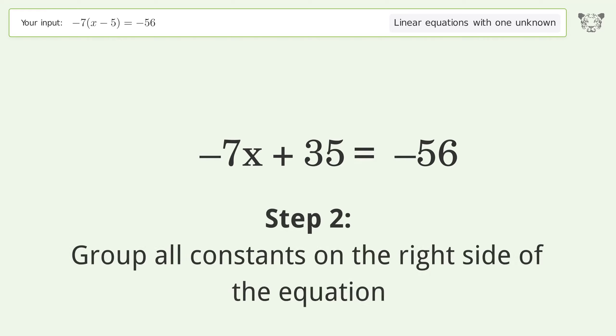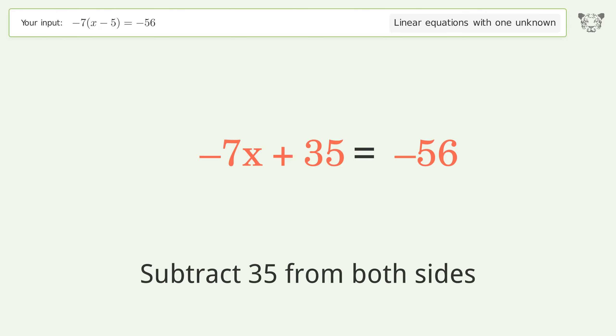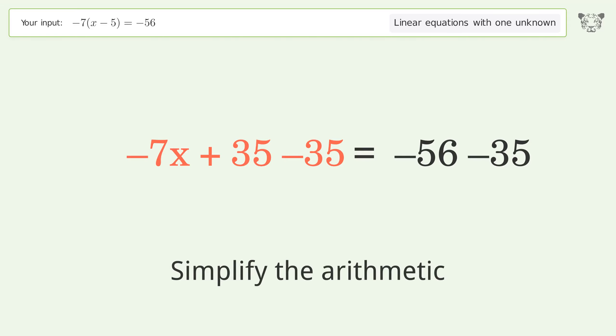Group all constants on the right side of the equation. Subtract 35 from both sides and simplify the arithmetic.